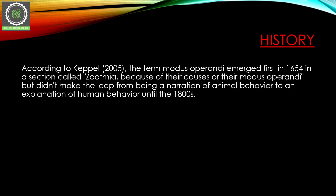Now let's read the history behind this term. According to Capel, 2005, the term modus operandi first emerged in 1654 in a section called Zootmia. At that time it described animal behavior, but it did not make the leap from being a narration of animal behavior to an explanation of human behavior until 1800.